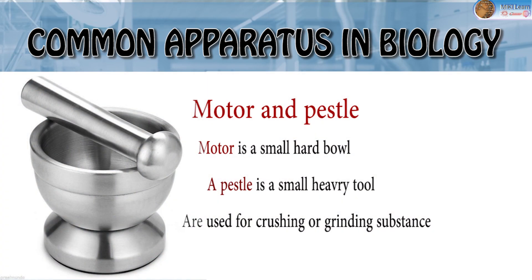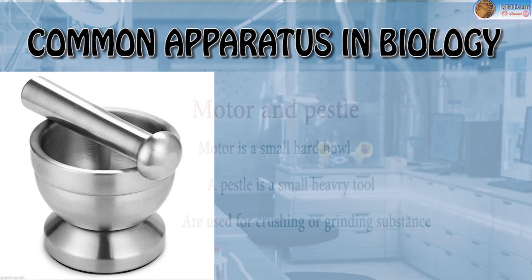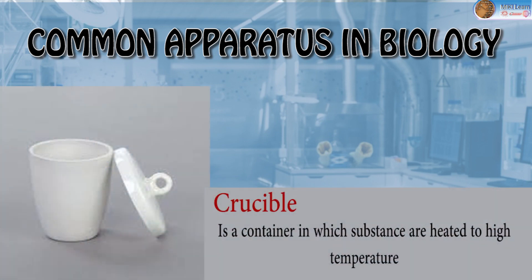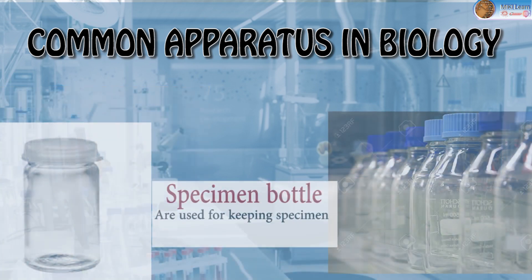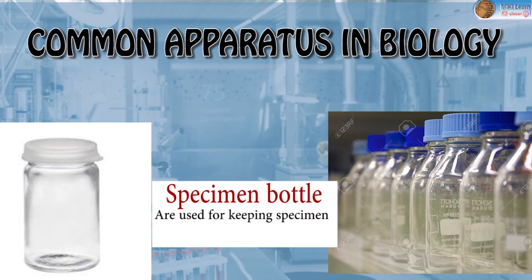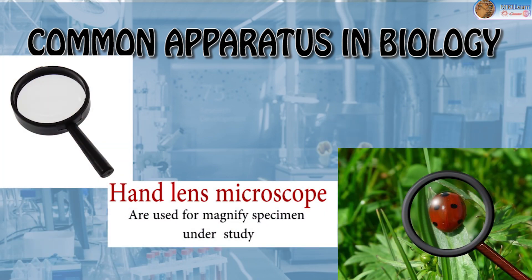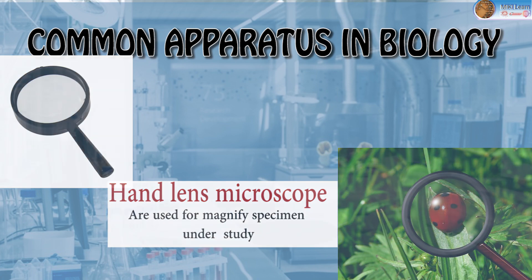Mortar and pestle: a mortar is a bowl used for crushing or grinding substances; a pestle is the small handheld tool used for grinding. Crucible: a container in which substances are heated to very high temperatures. Specimen bottle: a container for keeping specimens. Hand lens and microscope: used to magnify specimens under study.